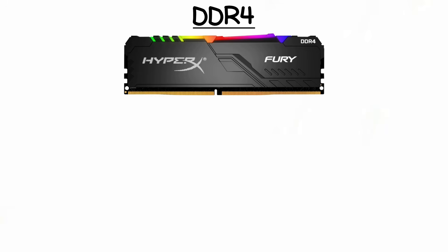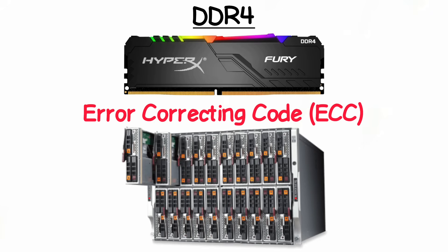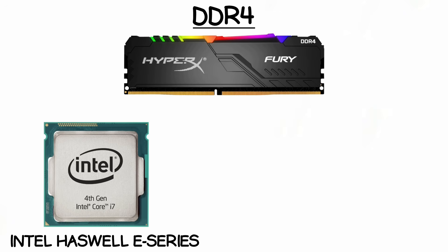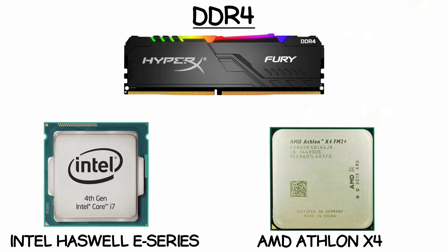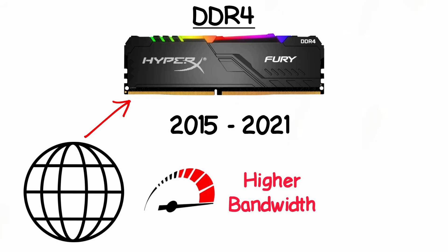Some DDR4 modules include error-correcting code, often used in servers for data accuracy and reliability. It first launched with Intel Haswell E-Series and AMD Athlon X4 processors. DDR4 became the global standard from 2015 to 2021, offering faster speeds, higher bandwidth, and better power efficiency than any memory before it.